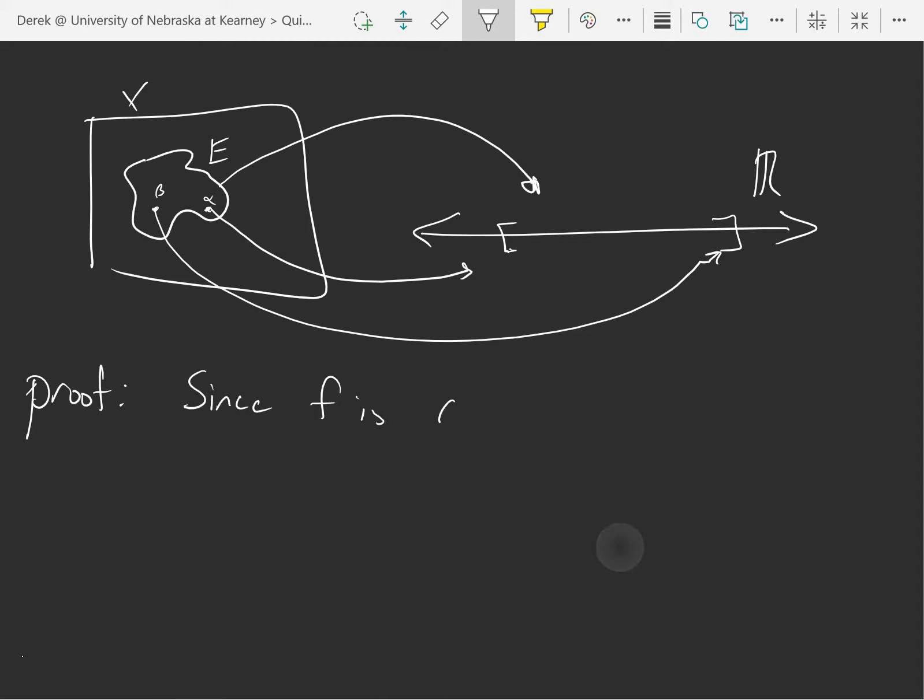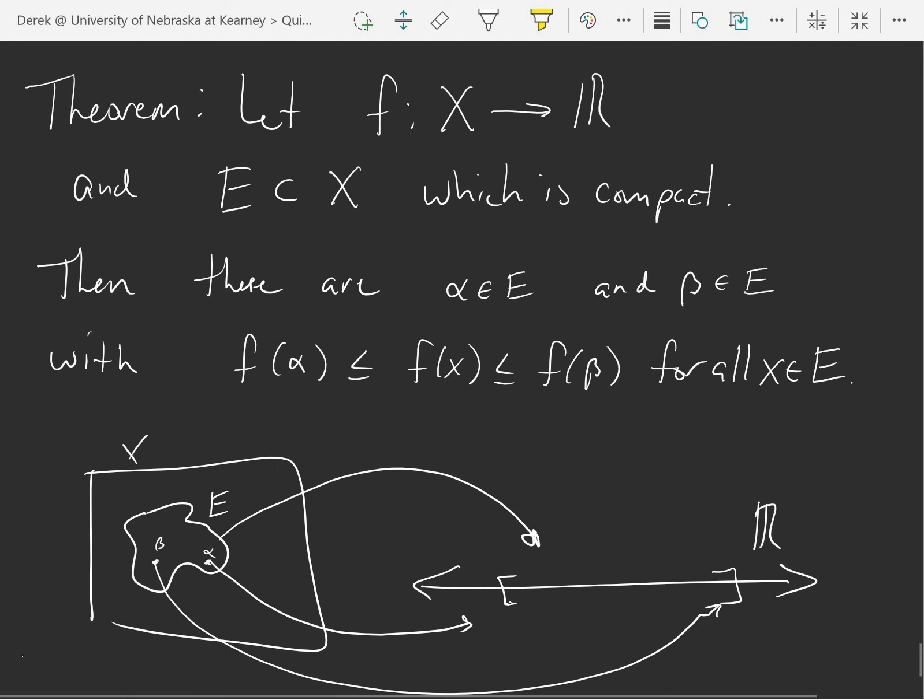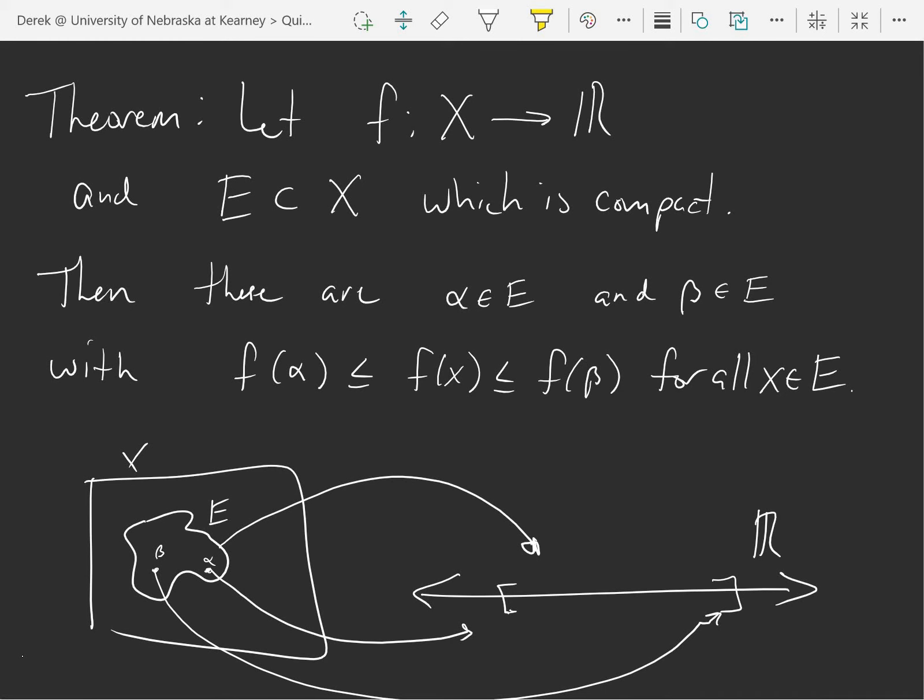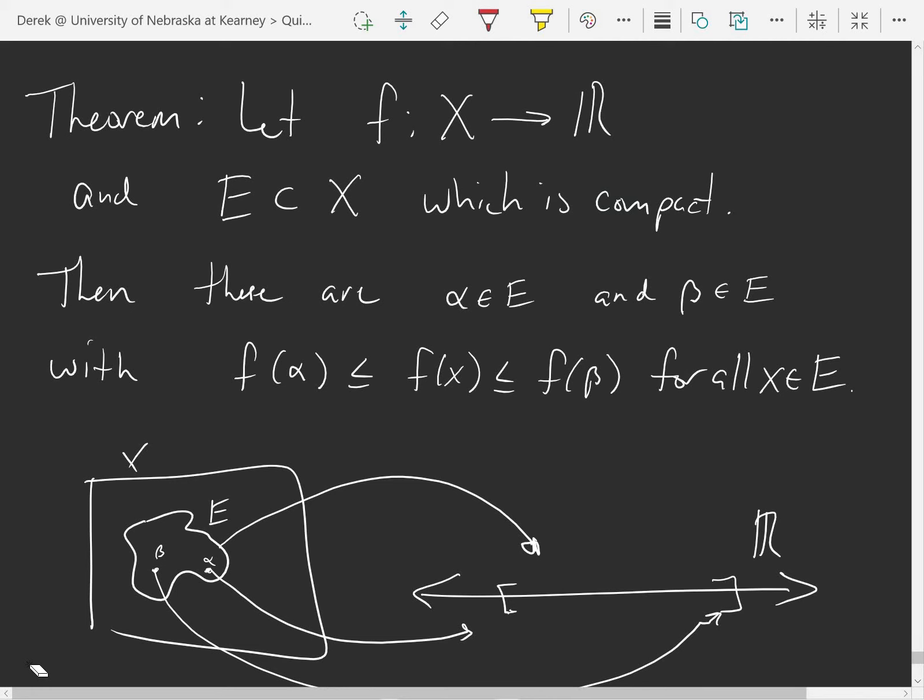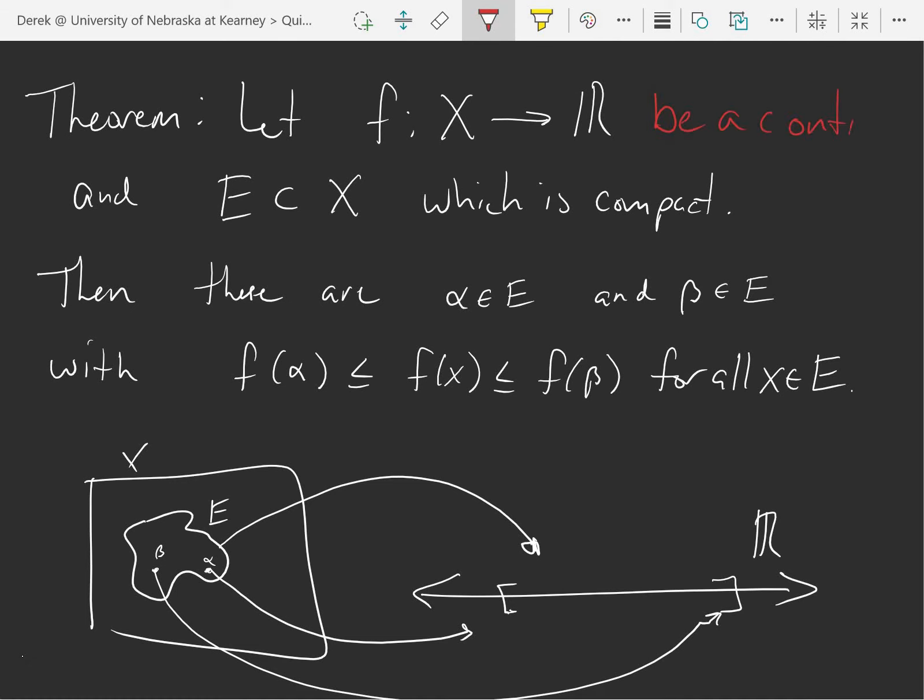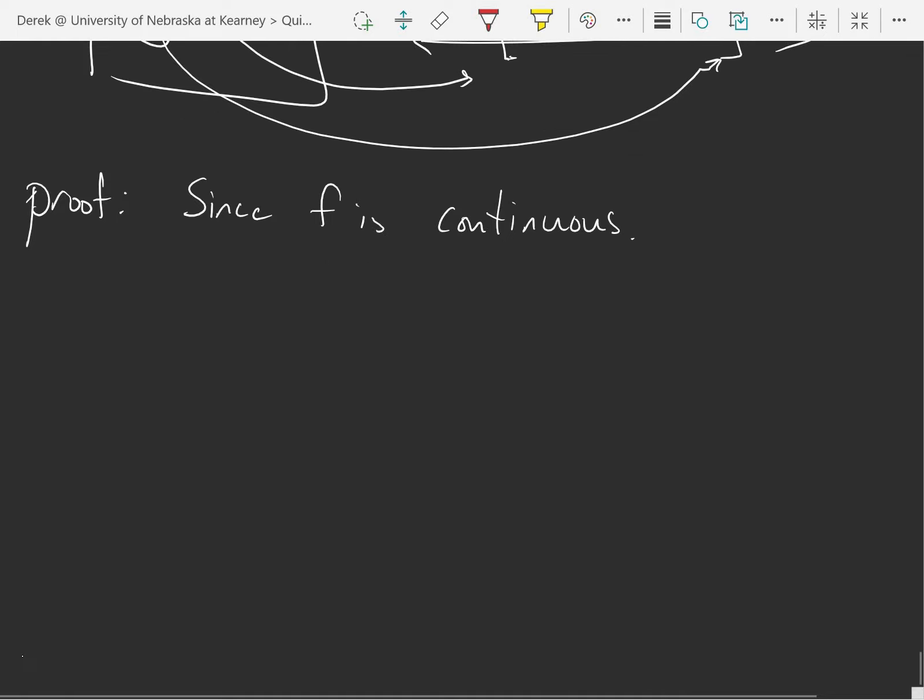Let's prove this. Since f is continuous. I did say that, didn't I? I did not say that. Let f map x to r be a continuous function. It needs to be continuous. If it's not continuous, you can find functions that don't take on their maximum or their minimum. Since f is continuous, f of e is compact in r.